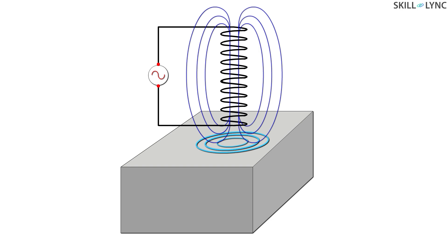Eddy current is defined as a current that is induced in a conductive metal due to a changing magnetic field in the conductor. These eddy currents flow in closed loops and their direction is perpendicular to the magnetic field.